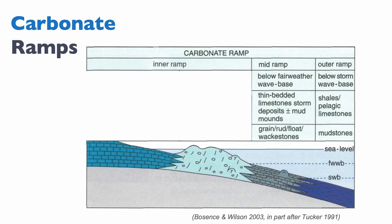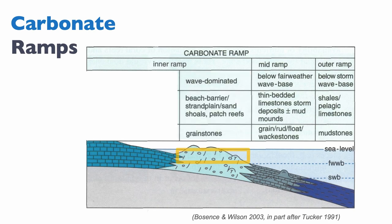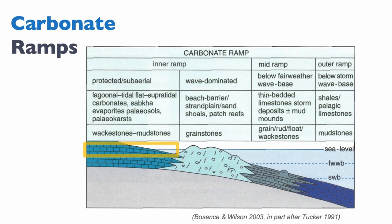Then we have the inner ramp, which comprises the shoal itself and everything that is more landward from the shoal. The shoal is wave-dominated and forms a beach barrier or a strand plain. It's essentially a massive body of sand that can contain patch reefs, but does not form continuous reefs — because if it formed continuous reefs, you'd have a rimmed platform. The main texture you can expect are grainstones. Beyond that into the inner ramp, you're in a protected environment where you can have subaerial deposits. It's a very low-angle dipping system, and you typically have lagoons, tidal flats, supertidal sabcha, evaporites, paleosol, and paleokarst.